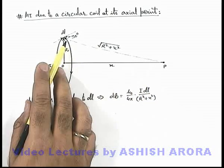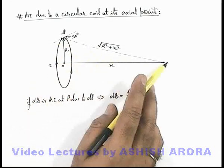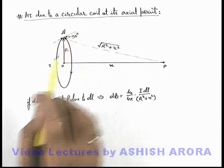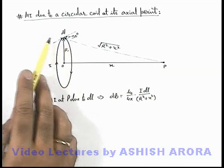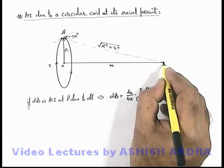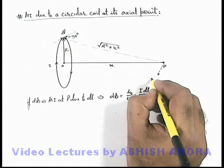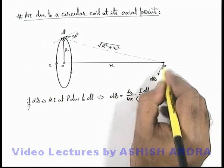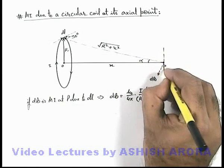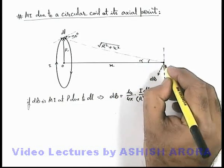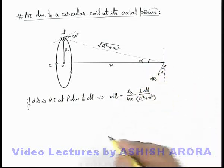And if we wish to see the direction that can be obtained by right hand thumb rule, here you can place your thumb along the direction of dl and fingers towards point p, then the direction will be perpendicular to this line joining. If this angle is alpha, from the plane normal to the axis this angle will also be alpha.